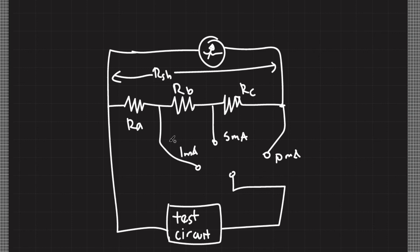I leave this as an exercise so you can practice deriving equations. Given a specific amount of current, derive an expression in terms of R sub A, R sub B, and R sub C for the shunt resistance.